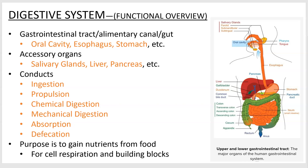When you think of digestion, most people think of food breaking down — that would be mechanical or chemical digestion — but there's a lot of other stuff involved. Ingestion is eating: you put food in your mouth and you immediately start mechanically and chemically digesting. You chew it up, get saliva on it, and mash it around, then you propel it down the tube. Ingestion comes first and defecation comes last, but they're all mixed in as you'll see.